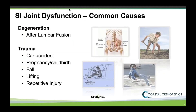Common causes of SI dysfunction or SI pain: after someone has had a lumbar fusion, the stress goes through joints above or below it, and one of the joints below it is the SI joint. So we see it commonly after lumbar fusions, but we also see it after car accidents, pregnancy or childbirth — because the pelvis has to expand during that process and it can put stress through the SI joint — and we see it after falls, lifting, or even repetitive injuries.